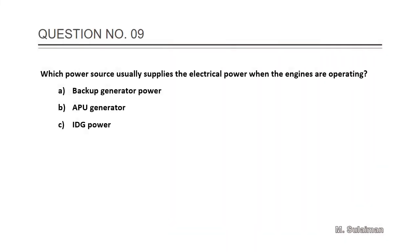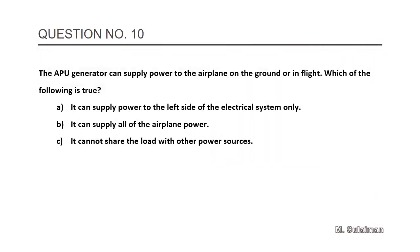Answer is C: the ELMS panels. Number eight: The primary external power automatically supplies power to the A: ground handling buses. Nine: Which power source usually supplies electrical power when the engines are operating? Answer is C. Question number ten: The APU generator can supply power to the airplane on the ground or in flight. Which of the following is true?